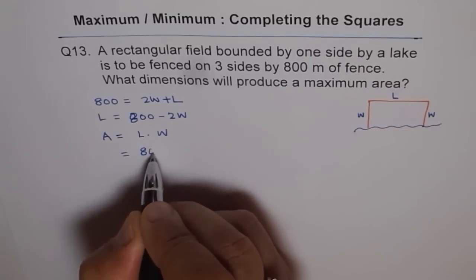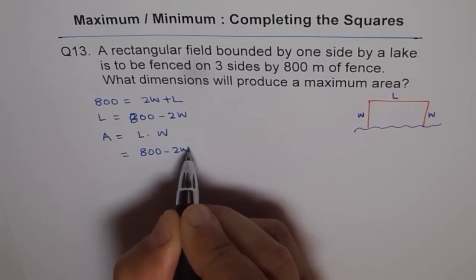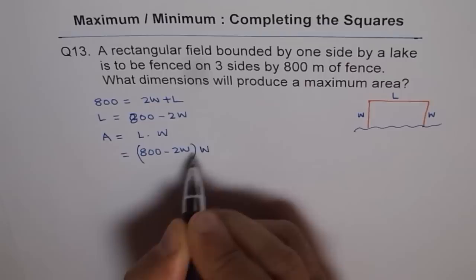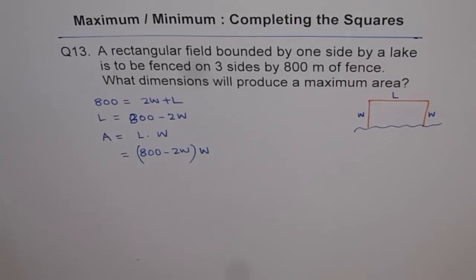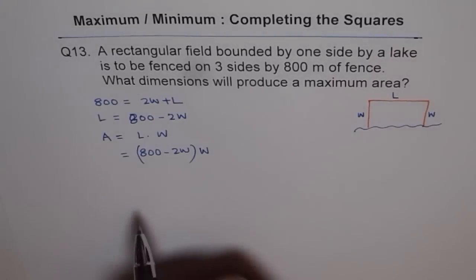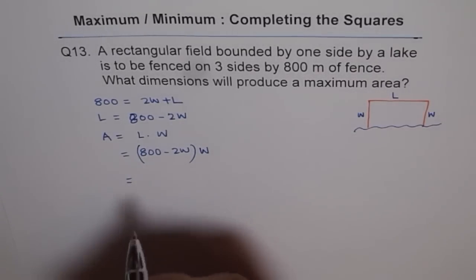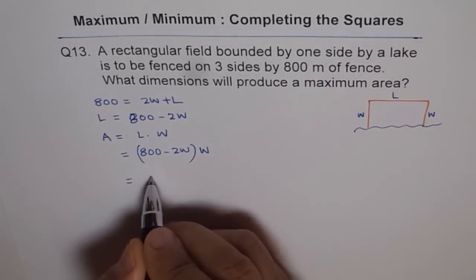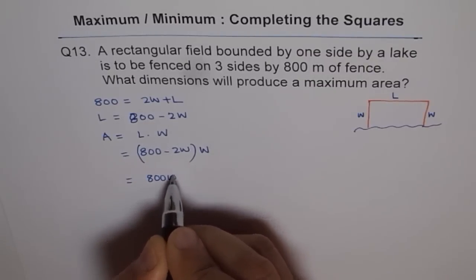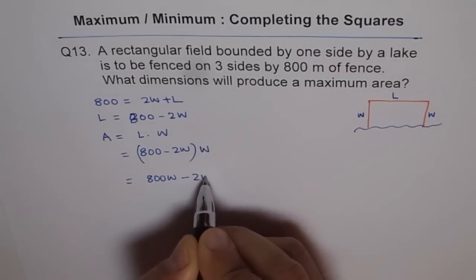So we'll write length as 800 minus 2W times W. We have 800 minus 2W times W. So that becomes our area in one variable. So let's expand this.